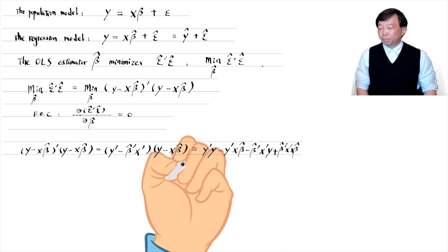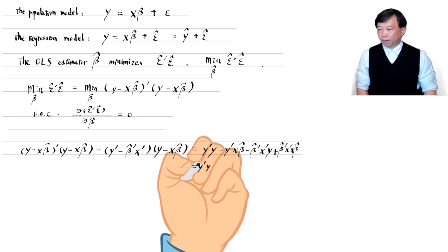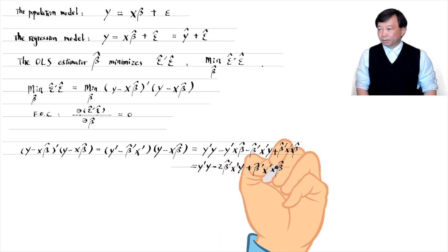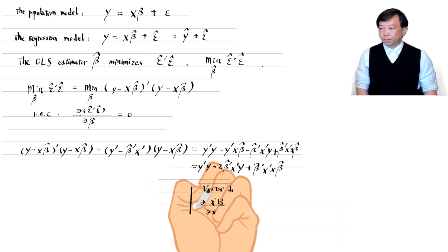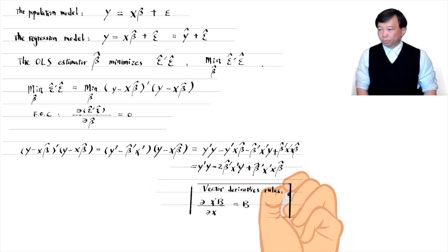Note that the middle two terms are the same because they are scalars and the transpose of a scalar is itself. We then use the vector derivatives rules.